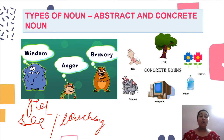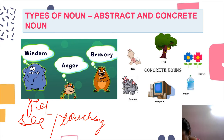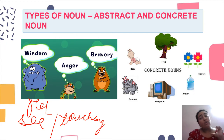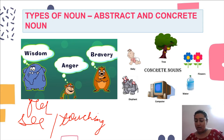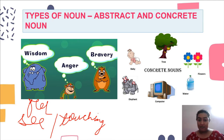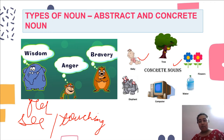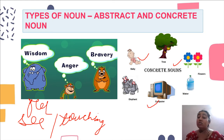That is all about abstract nouns. Now let's discuss concrete nouns. Concrete nouns are those nouns that you can see, you can feel, and you can touch with your own hands. Wisdom, anger, and bravery were abstract nouns because we can only feel them — we cannot see or touch them. But the opposite is concrete nouns, where we can also see them, touch them, and feel them. For example: a baby you can pick up, a tree you can see, flowers you can touch and smell, water you can see and drink, a computer you can use.